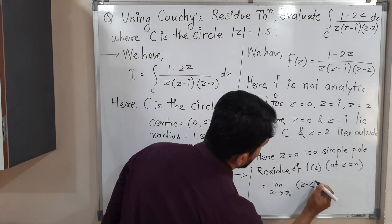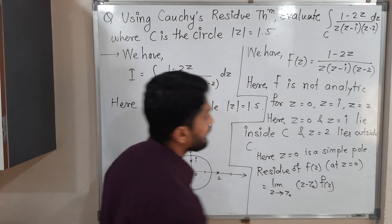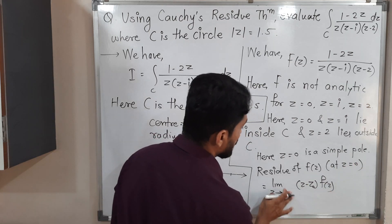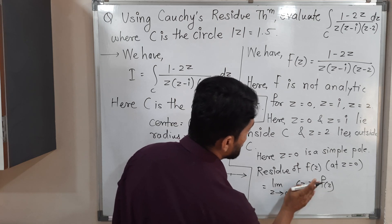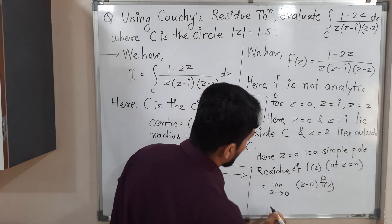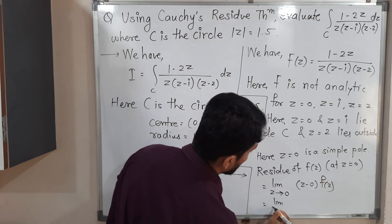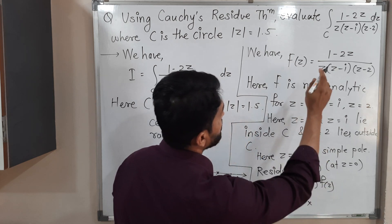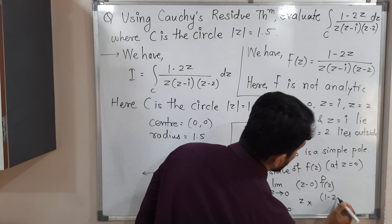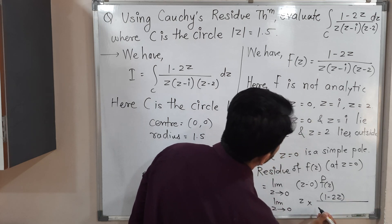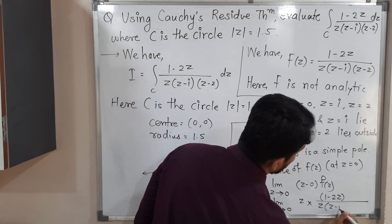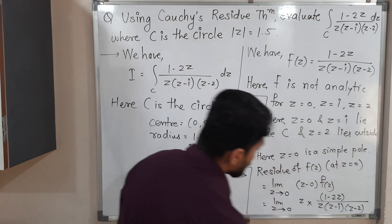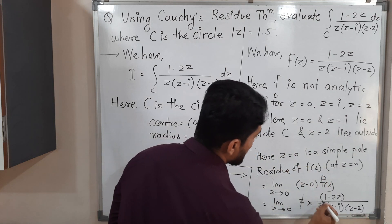The formula for a simple pole is: limit as z tends to z-naught of (z minus z-naught) times f(z). Here z-naught is 0, so we compute limit as z tends to 0 of z times (1 minus 2z) upon z times (z minus i) times (z minus 2). We can cancel the z in numerator and denominator.